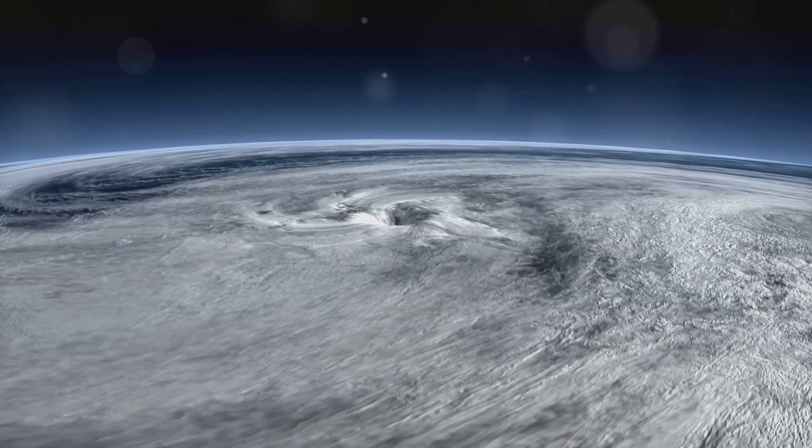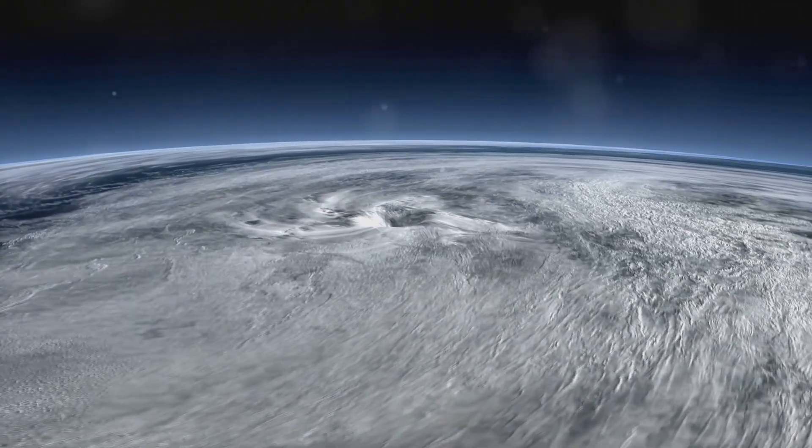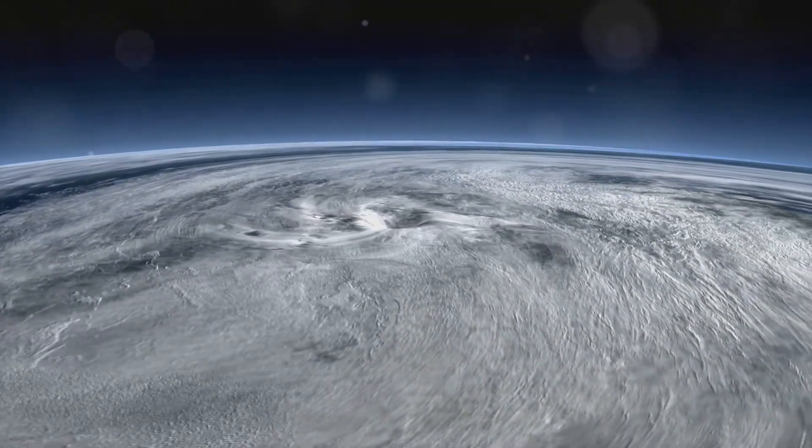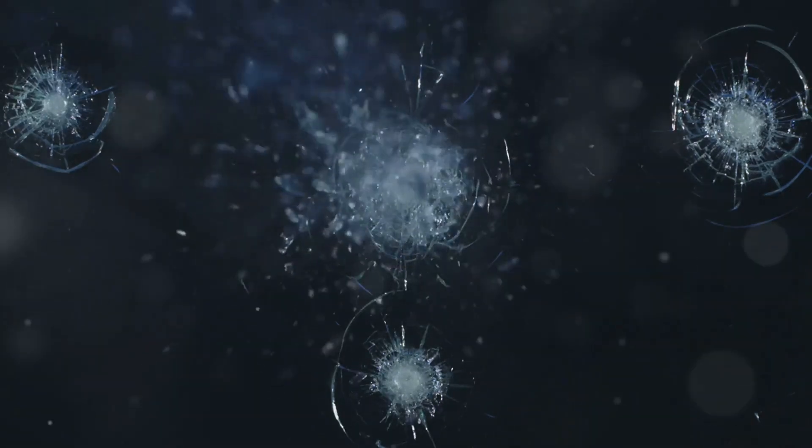HD 189733b is home to winds that howl at speeds of 5,400 miles per hour. These winds carry with them shards of molten glass, creating a sideways rain of razor-sharp shards. Imagine the sound of a thousand jets screaming past you at once. Now imagine that sound mixed with the constant tinkling of shattering glass. A high-pitched symphony of death and destruction.